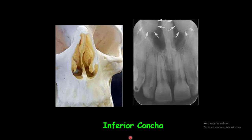The inferior concha. The lateral walls of the nasal aperture contain thin bony projections called the conchae. The conchae plus the mucosal covering are called the turbinates. On the periapical radiograph of the maxillary incisors, the inferior nasal concha is often visualized extending from the right and left lateral walls toward the septum.